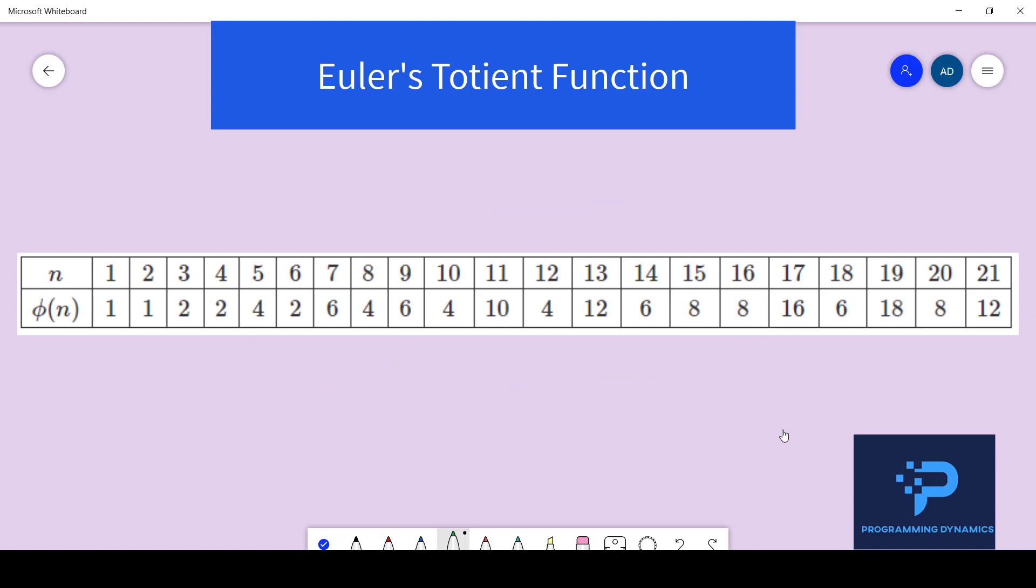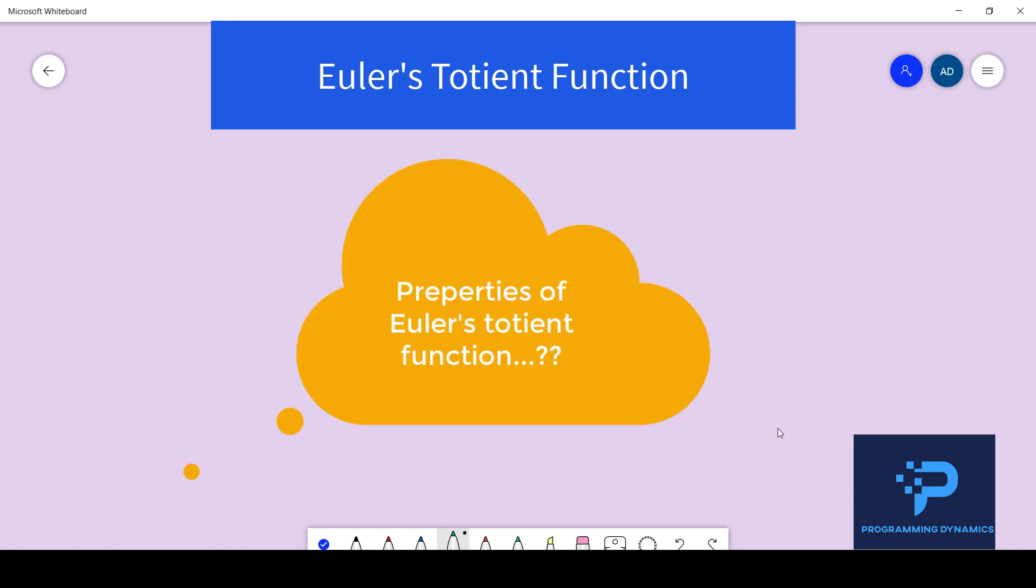Similarly, here are values of Phi of n for the first few positive integers. Let's learn about some interesting properties of the Euler's totient function.